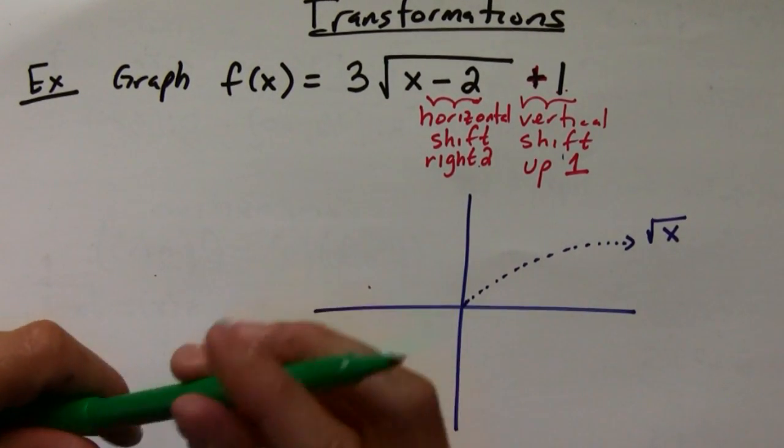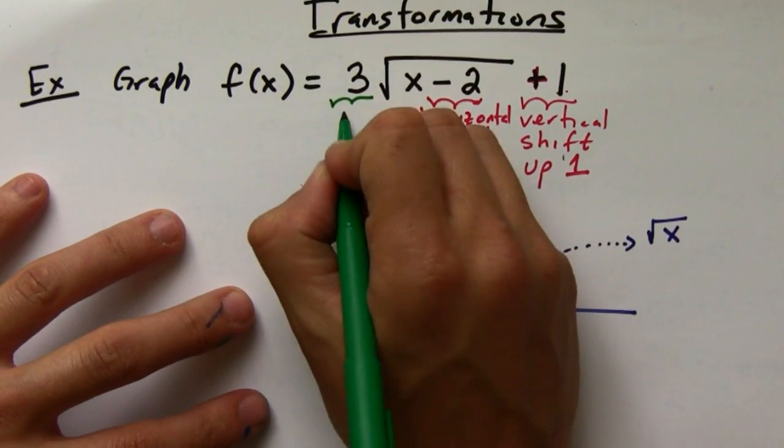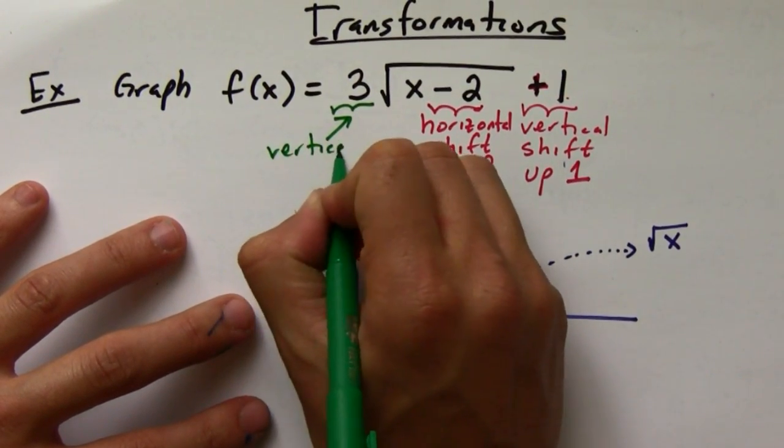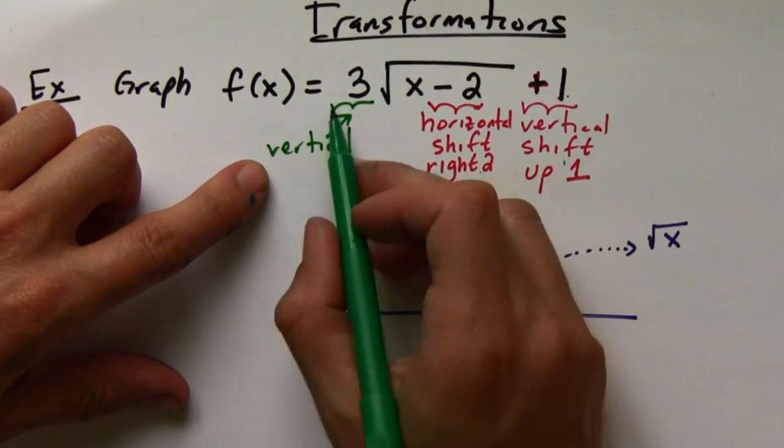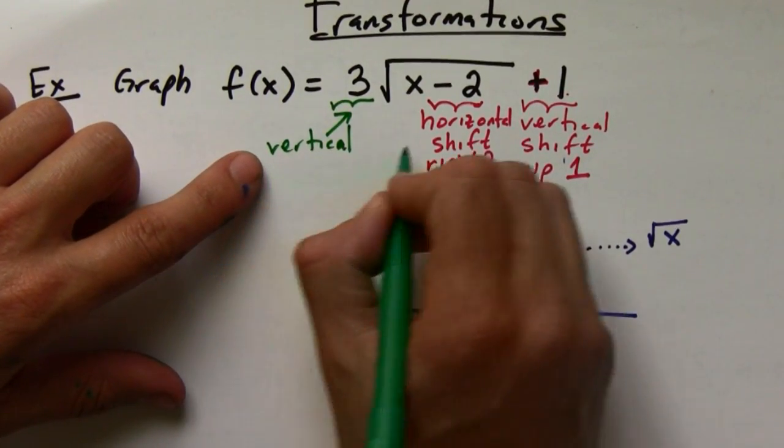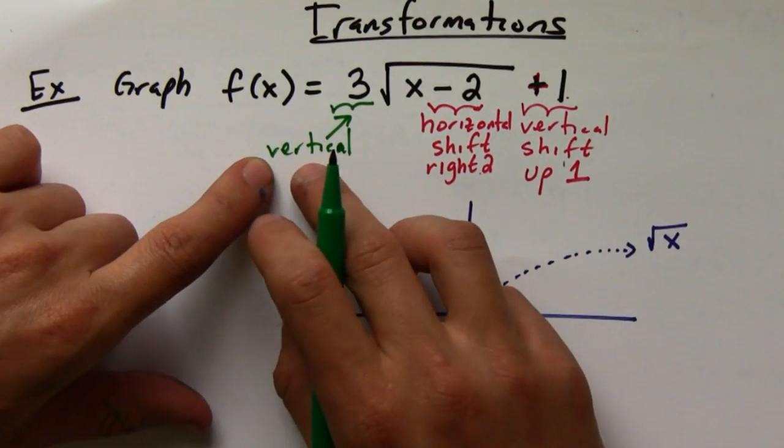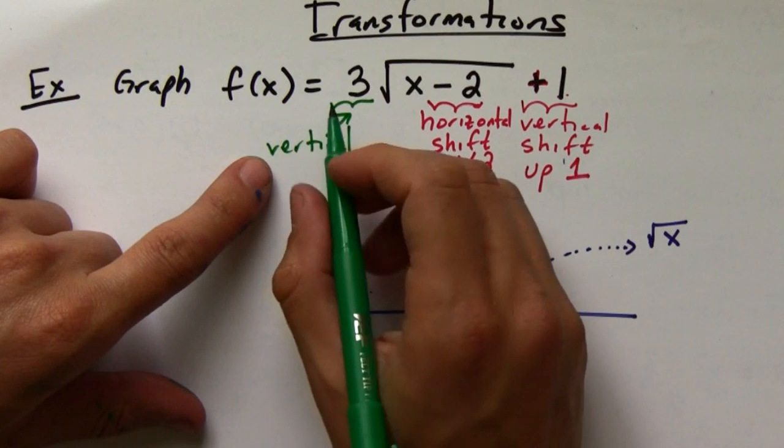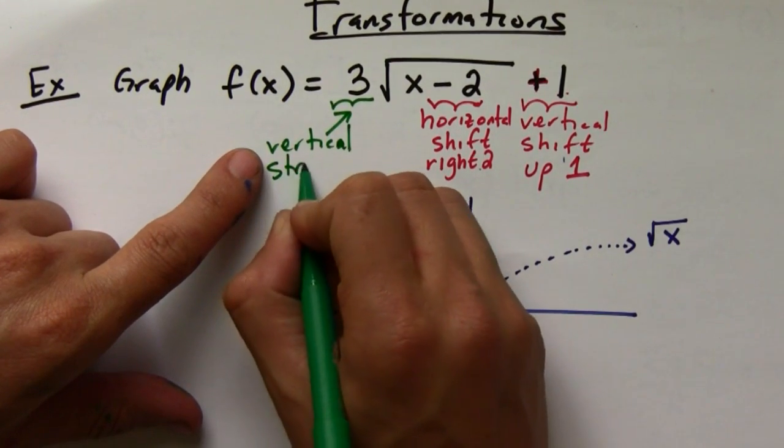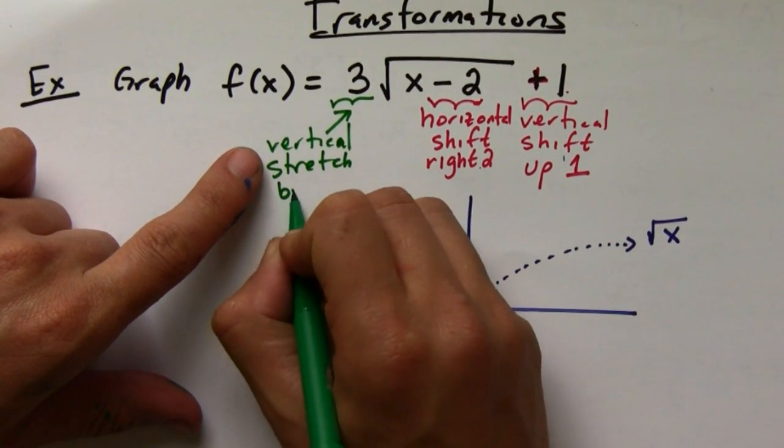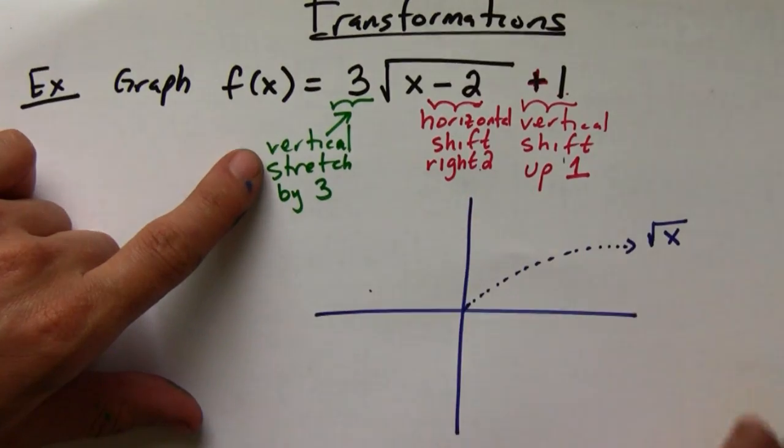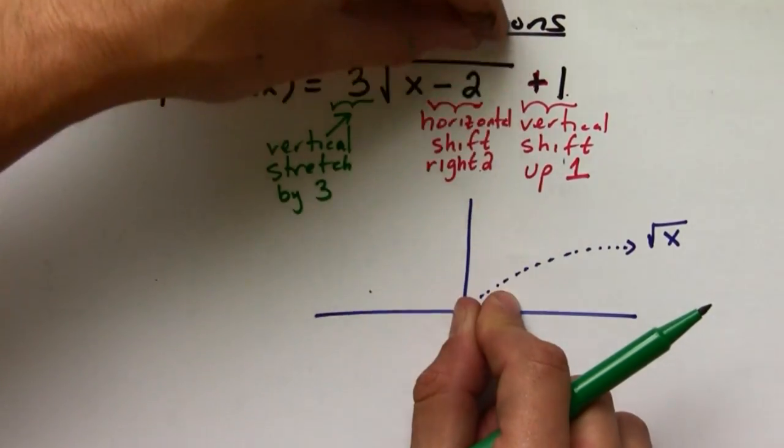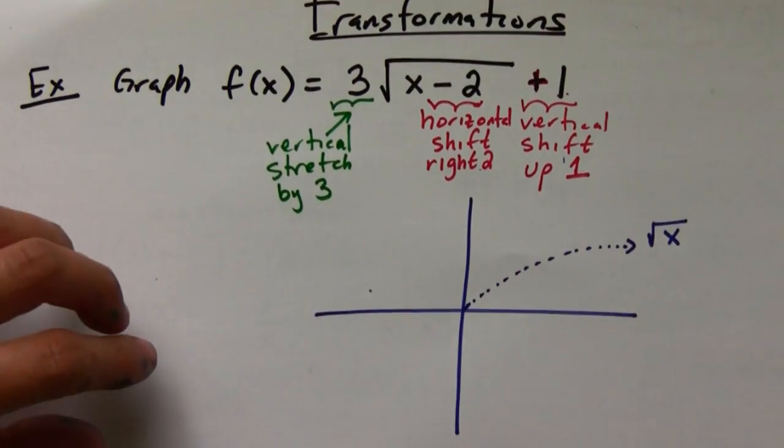Now, since I'm multiplying my entire function by a number, this is a vertical either stretch or compression. Remember that vertical transformations are exactly what it seems. Here I'm multiplying by positive three, that means I'm going to stretch by a factor of three. So if you imagine this, we're going to stretch it out by three, so it's going to make it taller.